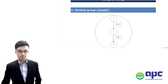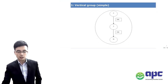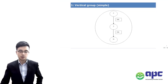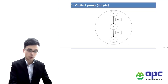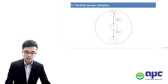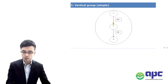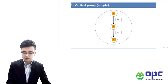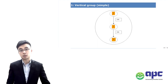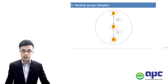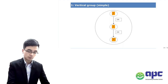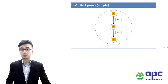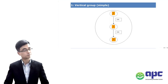So we've got the vertical group — the simple group — where the parent owns 70% of the subsidiary, and the subsidiary owns 70% of the sub-subsidiary. The parent will therefore control the sub-subsidiary as well.